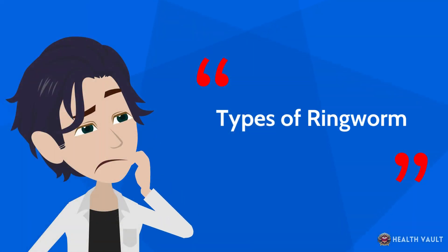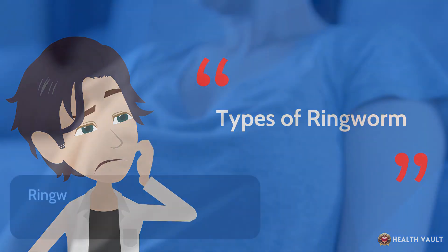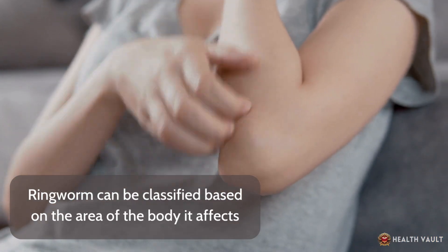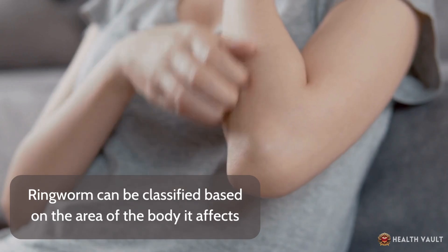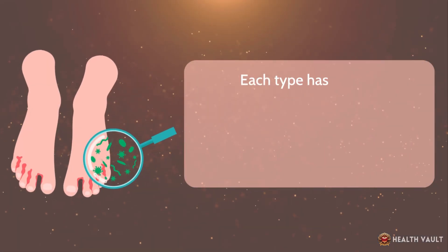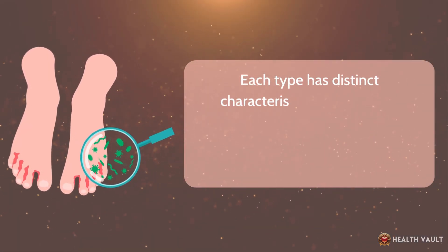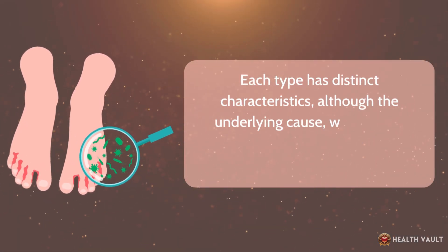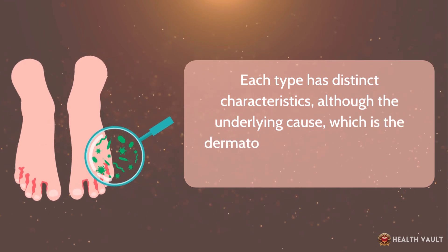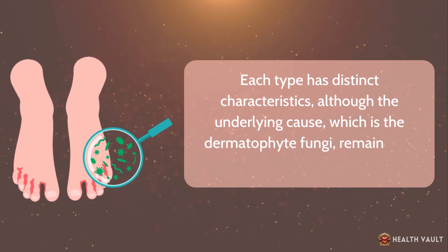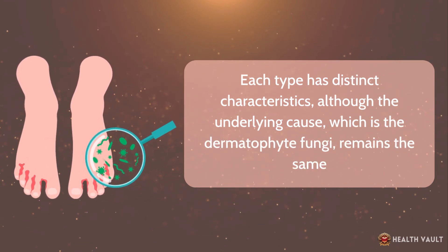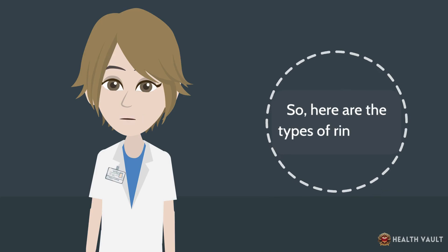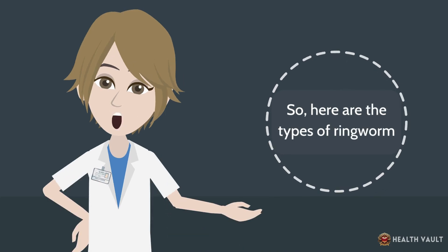Types of ringworm: Ringworm can be classified based on the area of the body it affects. Each type has distinct characteristics, although the underlying cause — the dermatophyte fungi — remains the same. Here are the types of ringworm.